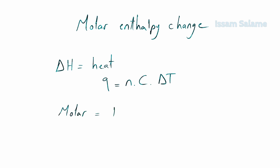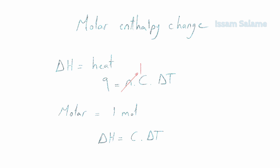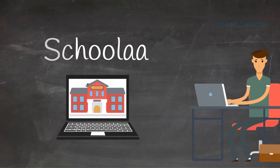Keep in mind that by molar enthalpy change we mean the change of enthalpy per one mole of a pure substance. So the formula for calculating molar enthalpy change is: ΔH = c × ΔT, where c is the molar heat capacity multiplied by the change in temperature. Keep in mind that the change in temperature should be in Kelvin.